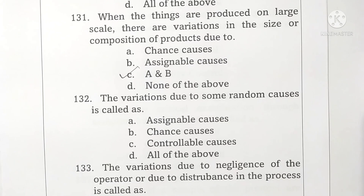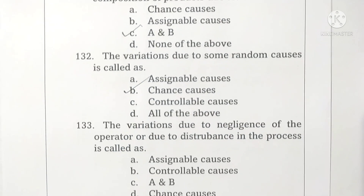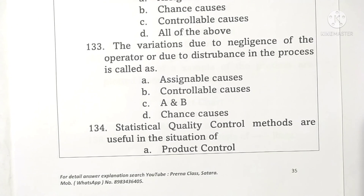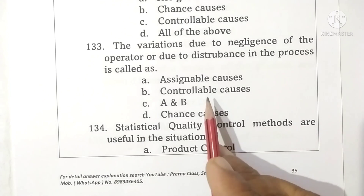Question 132: variations due to some random causes are called chance causes. Option B is correct. Question 133: variations due to negligence of the operator or due to disturbances in the process are called assignable causes (also referred to as non-trivial causes). Since assignable causes and trivial causes are the same, option C is correct.